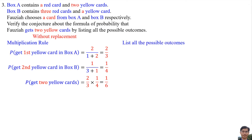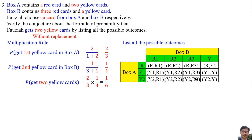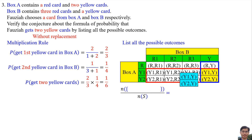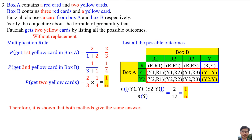Listing all the possible outcomes — these are the sample space. Y1 means the first yellow card in Box A, Y2 means the second yellow card in Box A. R1, R2, R3 are the red cards in Box B, and Y is the yellow card in Box B. The probability of getting two yellow cards by listing outcomes is also 1 per 6. Therefore, it is shown that both methods give the same answer.